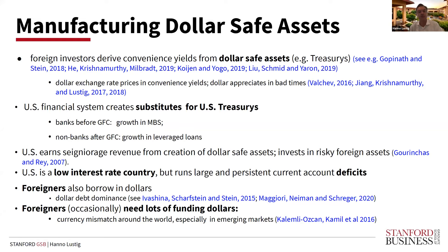For example, before the great financial crisis, banks were heavily involved in the growth of MBS — you could think of this as catering to safe asset demand on the part of foreign investors. More recently, non-banks have become involved in this, as you see in the growth of the leveraged loans market. As a result, the U.S. earns considerable seigniorage revenue from the creation of dollar safe assets, then goes on to invest this in risky foreign assets.